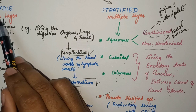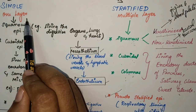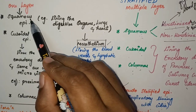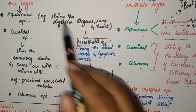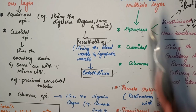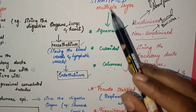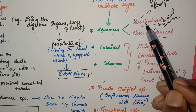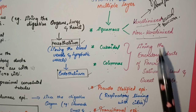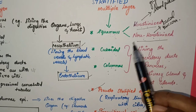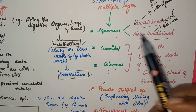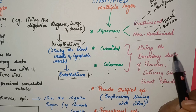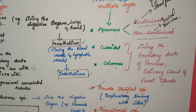To summarize the classification: epithelium is first divided into simple and stratified. Simple epithelium — one layer — includes squamous, cuboidal, and columnar types, each lining specific organs. Stratified epithelium — multiple layers — includes stratified squamous, cuboidal, and columnar. Under stratified squamous, there are two types: keratinized and non-keratinized, giving us terms like stratified squamous keratinized and stratified squamous non-keratinized epithelium.